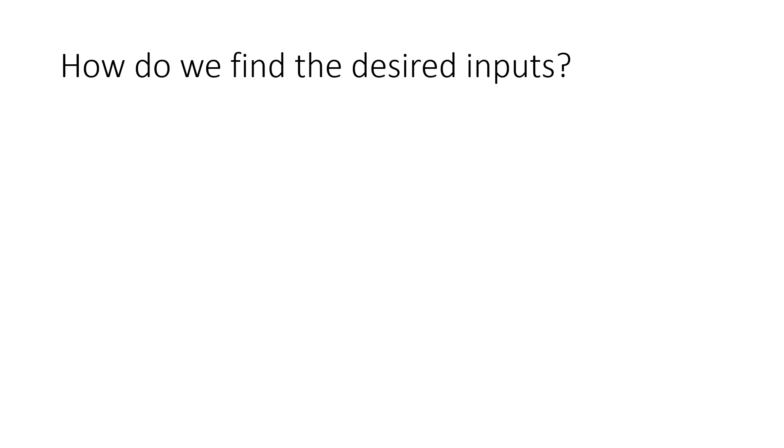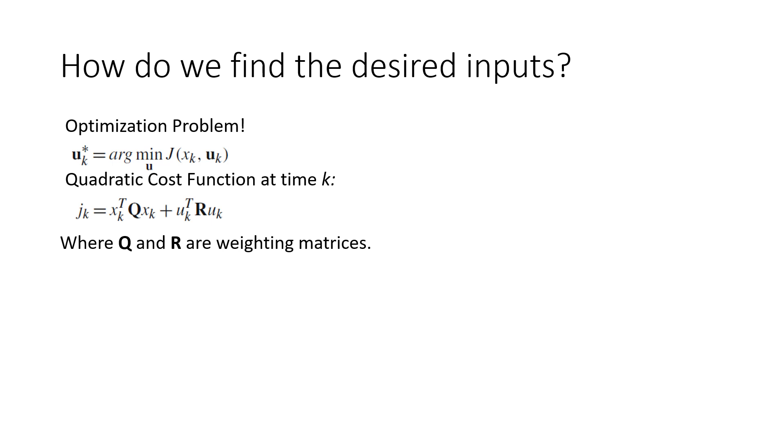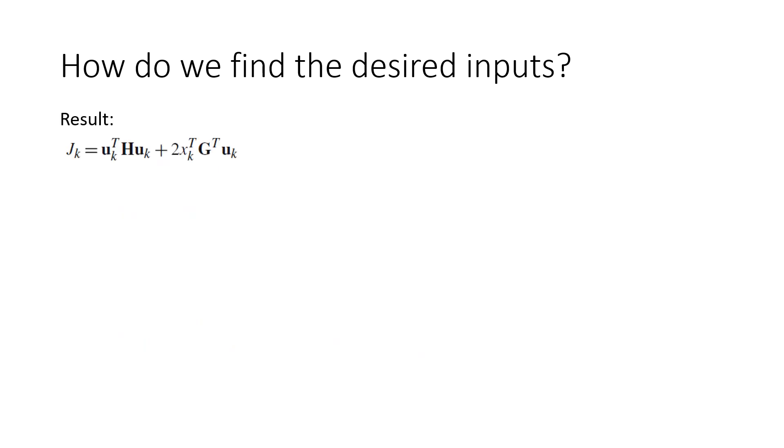So how do we find the inputs that give us the desired outputs? This is just an optimization problem. Let's assume that over our prediction horizon, we can determine some cost of our output called j, that is only a function of our current state and our future inputs. We want to find the optimum future inputs that minimize this cost j. I'm not going to go into the math here, but if you use the difference between the desired reference and the predicted outputs as the cost, you can formulate the cost function j to be the quadratic cost function, the same one that we used in class for our LQR design. This quadratic cost function is shown for a single time, where q and r are the weighting matrices chosen by the control designer. We can then sum this cost over the entire prediction horizon.